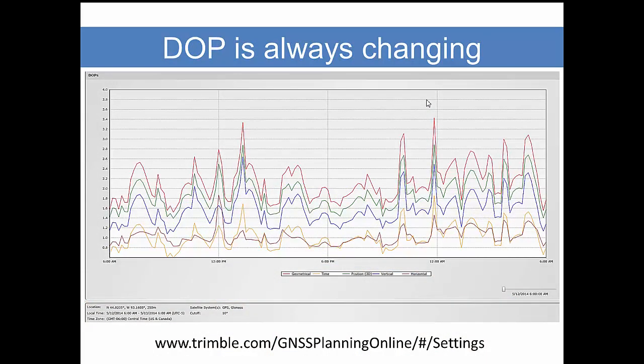Dilution of precision is constantly changing. Why? Well, the satellites are moving, and in one of the previous videos you saw how the satellite positions do not stay in a rigid formation as they streak across the sky. Satellites are rising and setting. When our positional dilution of precision is less than three, we can expect very good results. When it exceeds that, then we can expect problems with our positional quality.